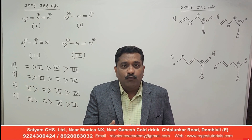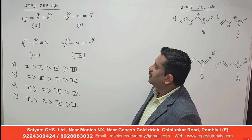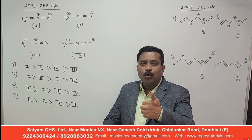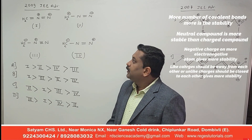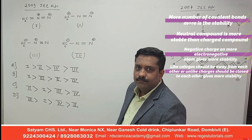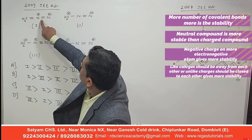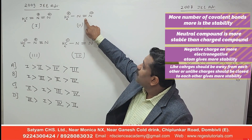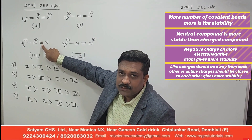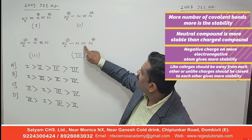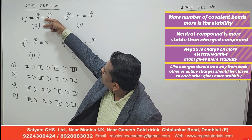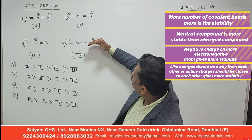Let us move on to the 2019 JEE Advanced question where four structures are given and we have to identify the stability order. Applying Rule 1 — rather than counting all covalent bonds, checking the number of pi bonds is sufficient. Structure 1 has two pi bonds, Structure 2 has one pi bond, Structure 3 has two pi bonds (triple bond = one sigma + two pi), and Structure 4 has one pi bond.